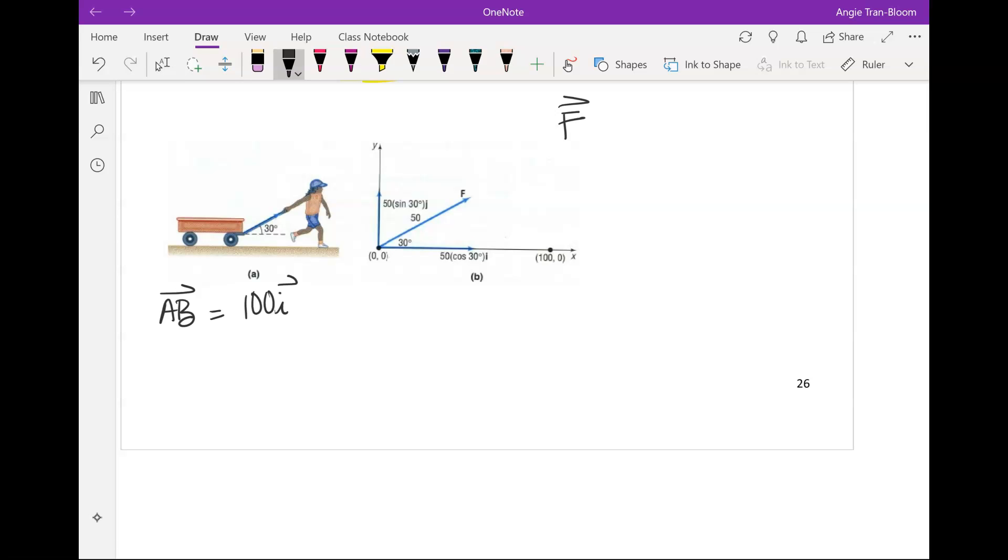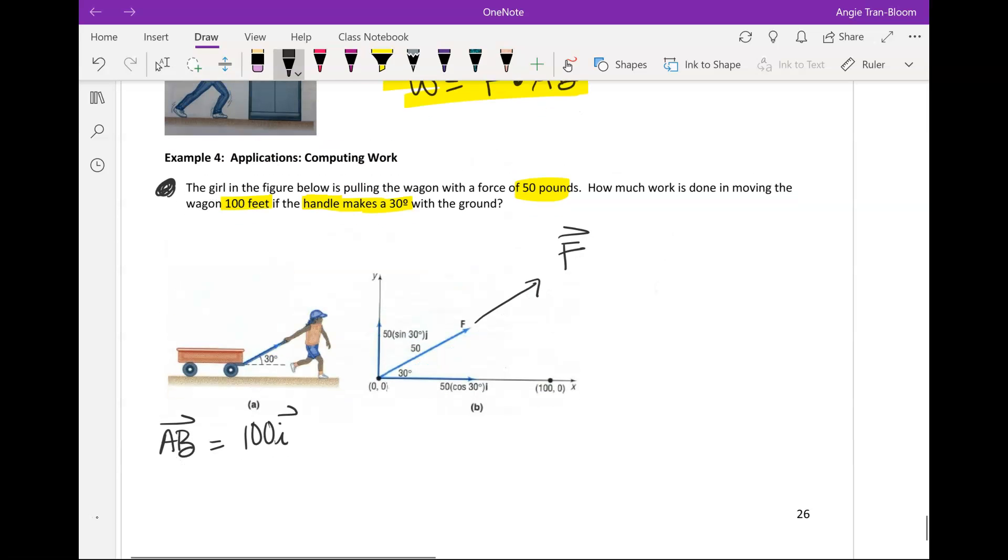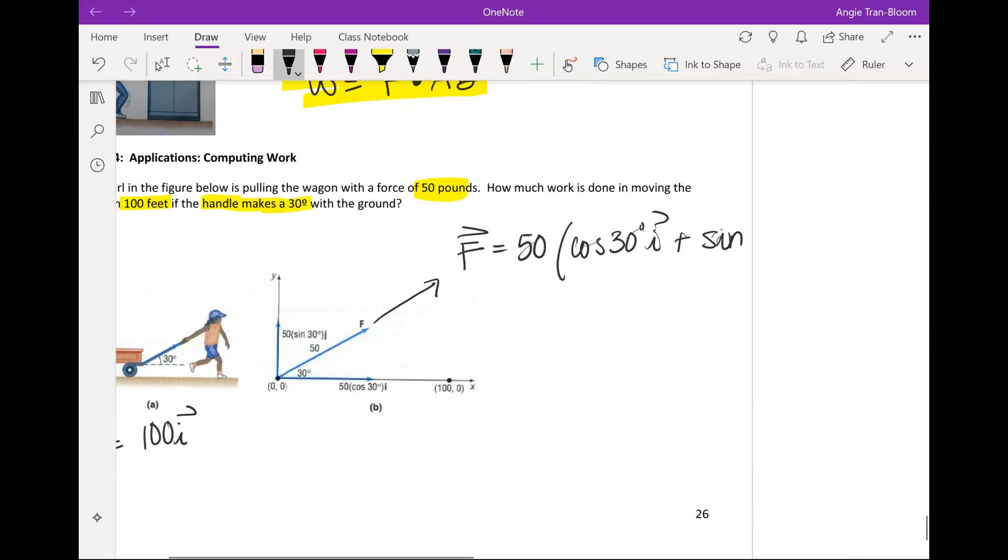Now the force is this dude right here. So the force, we know the force has a magnitude of 50 pounds and it has a degree of 30. So we are going to put it in polar: 50 times cosine of 30 degrees plus sine of 30 degrees in the j direction. So how do we get this force? We go this distance and we add this distance to get your force.